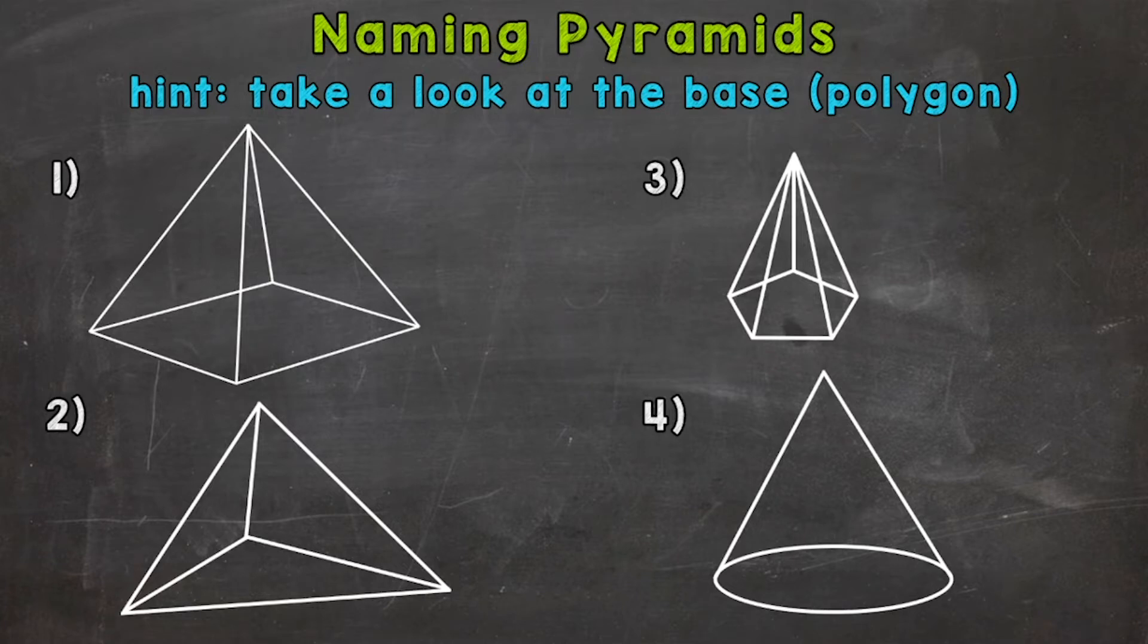We'll jump right into number one. The first thing we need to do is find the polygon face that pyramid sits on, and that's going to be our base. It's the square down here. I know none of the side lengths are marked, but they all are the same, so it is a square. That's our base, and then we have the triangular sides or faces going around the pyramid, which meet